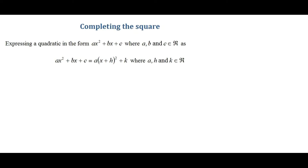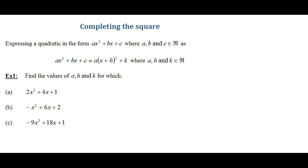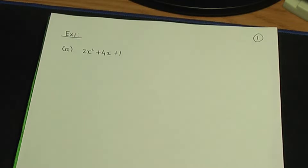So let me show you how to complete the square. I have some examples. Here's example one: find the values of a, h and k. In part a, we have 2x squared plus 4x plus 1. So let's complete the square of that quadratic. Back to the paper and pen. So here's the example: 2x squared plus 4x plus 1. Let me break down the method in steps.